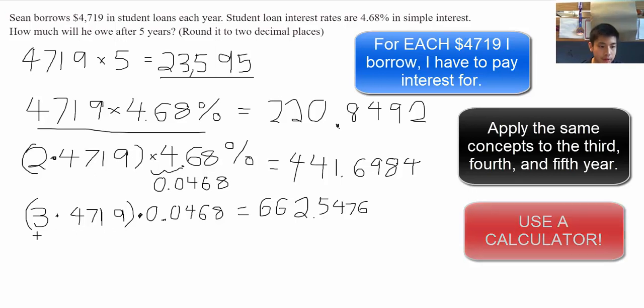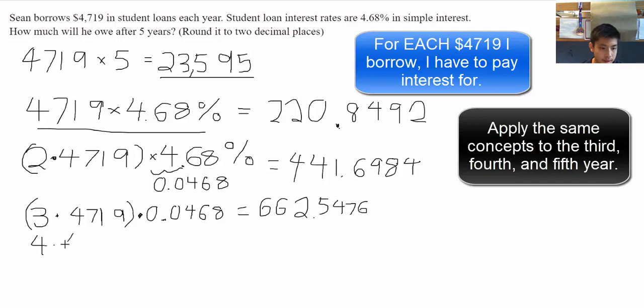Alright, so, fourth year, same thing. Four times $4,719 times 0.0468. This is equal to $883.3968.